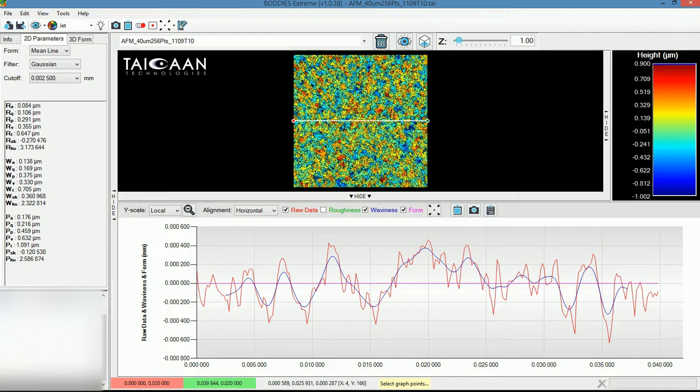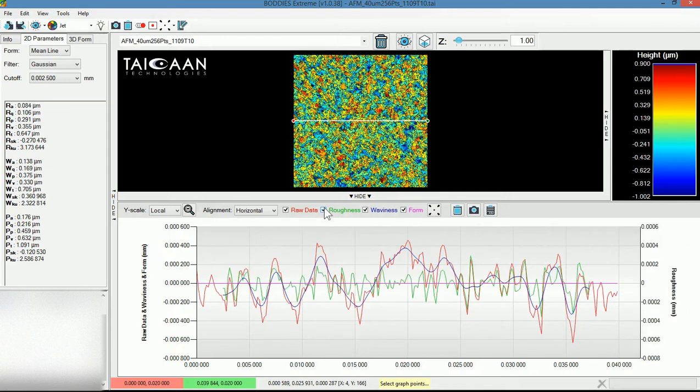Finally, before we look at the parameters in more detail, if I click on the final button here, the roughness is essentially the difference between the raw data and the waviness data. So I'll just repeat, the roughness shown in green is the difference between the raw data and the waviness data.